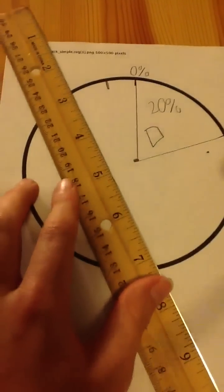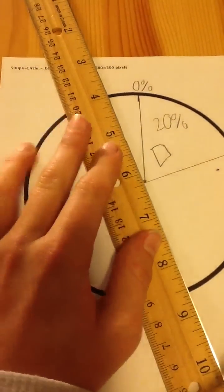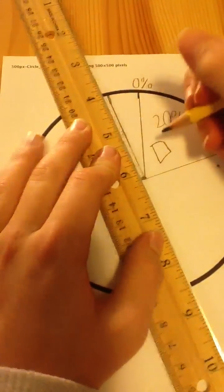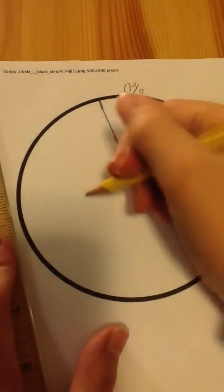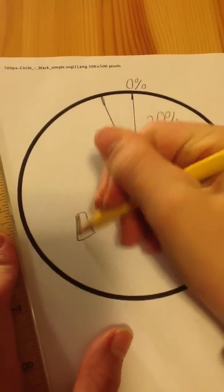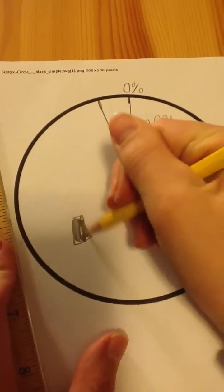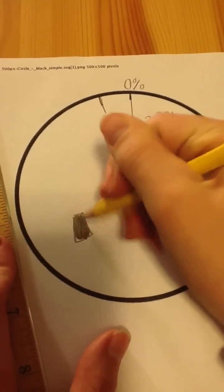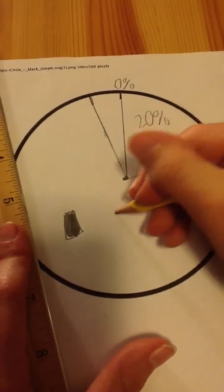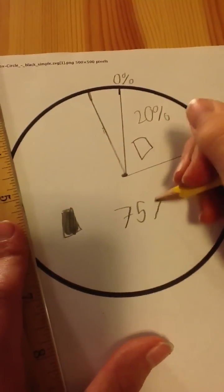And then you draw that out, measure it, draw it. This square is dark gray or black, kind of. And then you can write seventy-five percent.